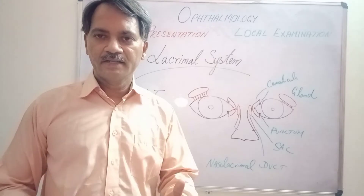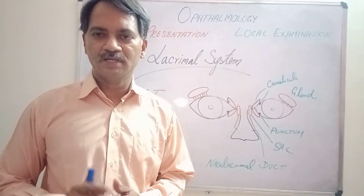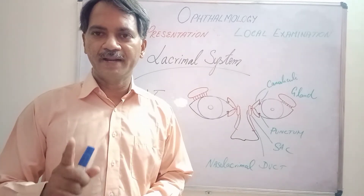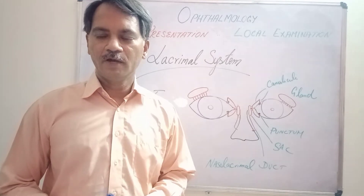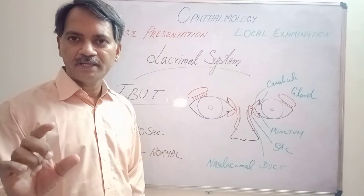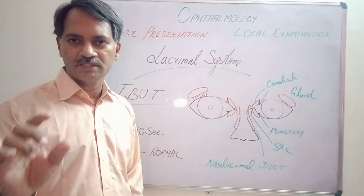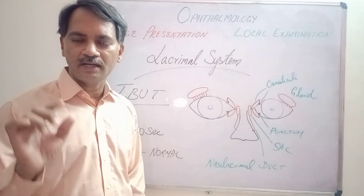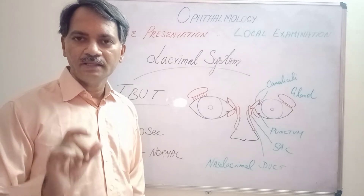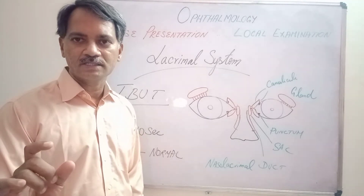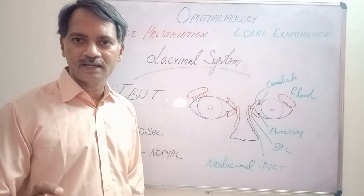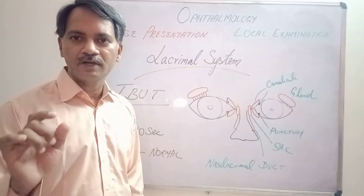Another test to diagnose dry eye is the TBUT — Tear Film Break-Up Time test. One drop of fluorescein is instilled into the conjunctival sac. The patient is asked not to close their eyes and the tear film is observed under the slit lamp. Normally, the tear film takes more than 10 seconds to break up. If it breaks up in less than 10 seconds, it is diagnostic of dry eyes.